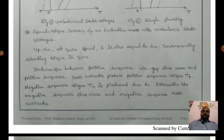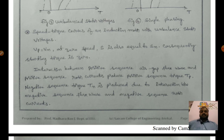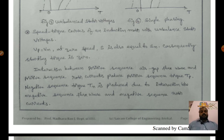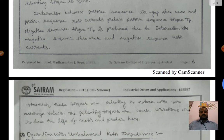Interaction between the positive sequence air gap flux wave and positive sequence rotor current produces positive sequence torque. Similarly, the negative sequence torque Tn is produced due to interaction between the negative sequence flux and negative sequence rotor currents, resulting in torque in the negative (braking) direction.